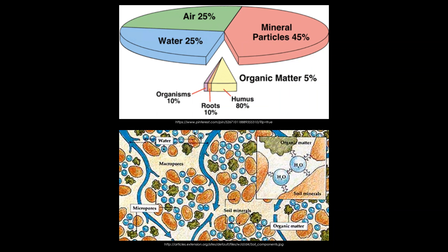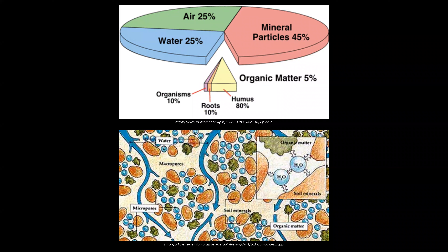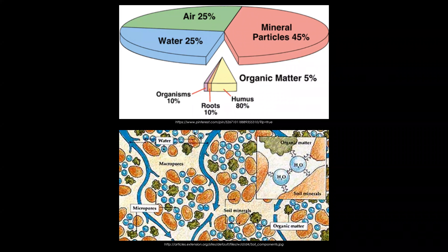The soil biology diagram needs updating — it used to show 10 organisms, but research is now finding it's closer to 50. Massive amounts of previously unrecognized biological life are a major constituent of the organic matter profile that wasn't fully understood before.